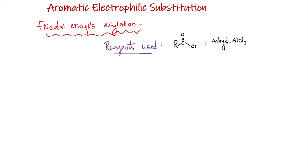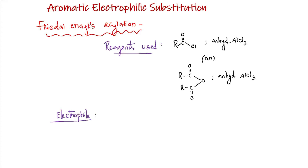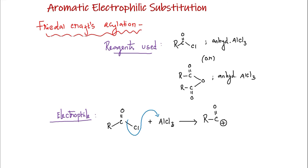In Friedel-Crafts acylation, the reagents used are acetyl chloride or acetic anhydride in the presence of anhydrous AlCl3. When AlCl3 is treated with acetyl chloride, it will break the C-O-Cl bond heterolytically to form the acyl carbocation or acetyl carbocation.